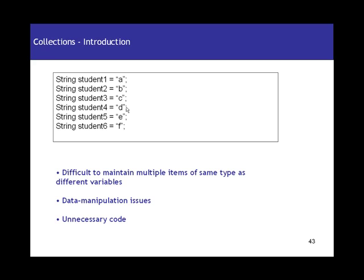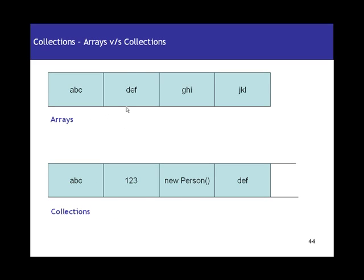One solution to this would be arrays. We've already seen that you can group multiple items of similar kind in arrays — a string array called 'studentName' can hold all six values. But let's see what advantages collections have over arrays.